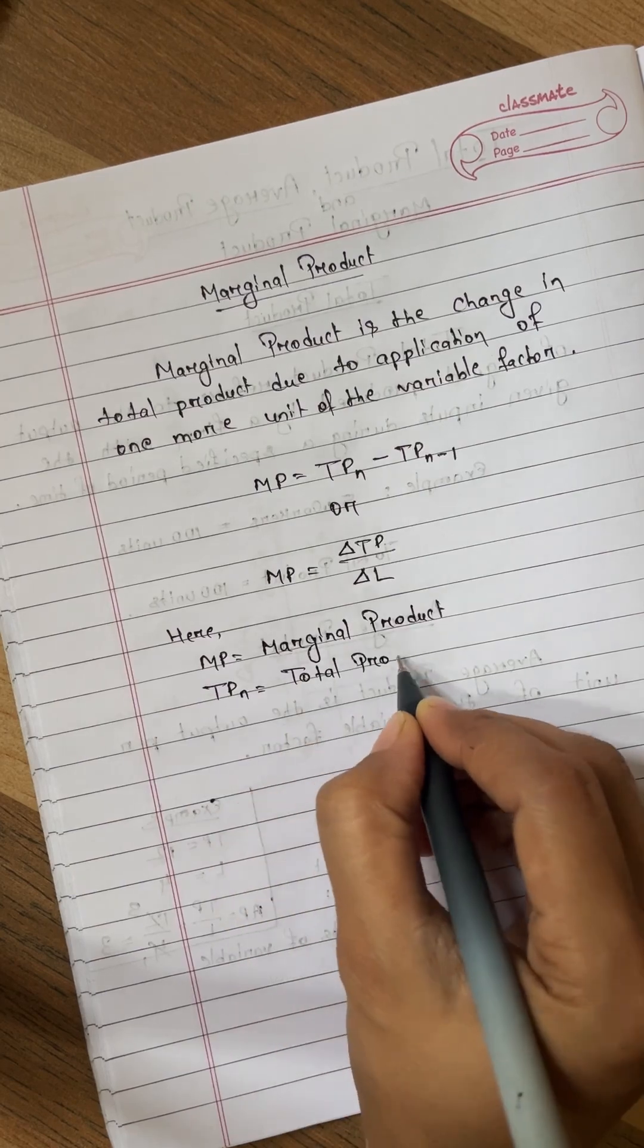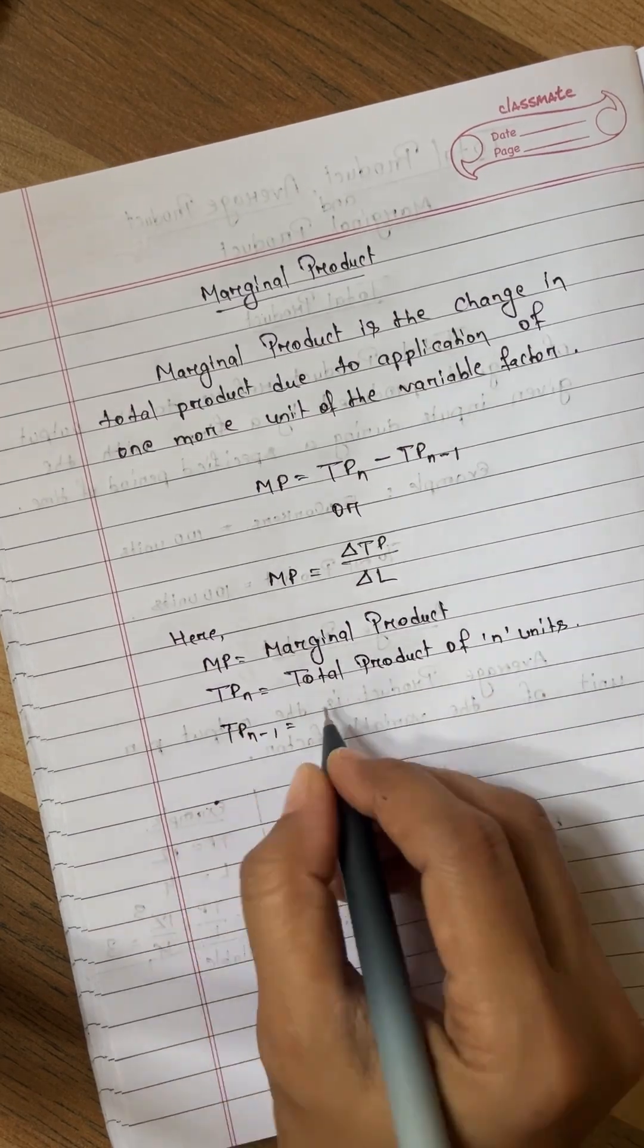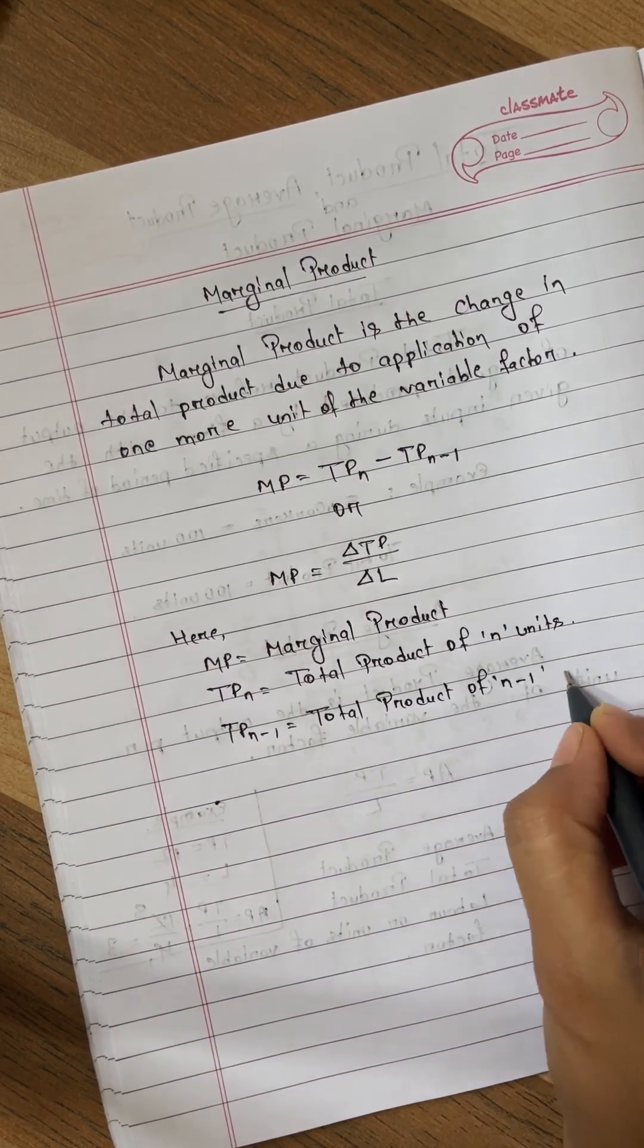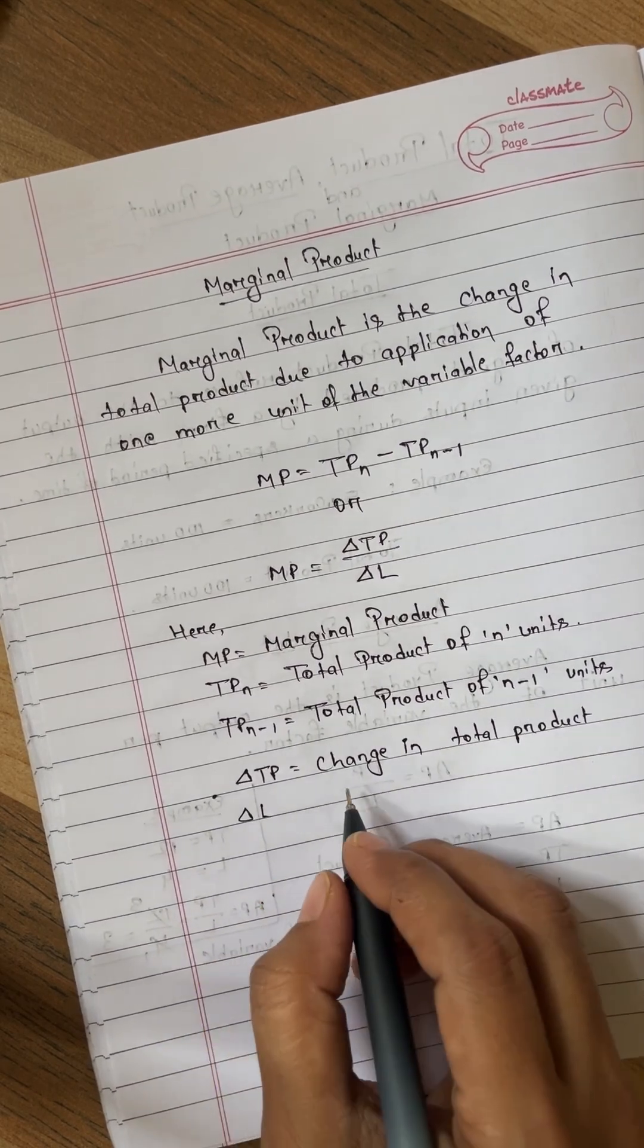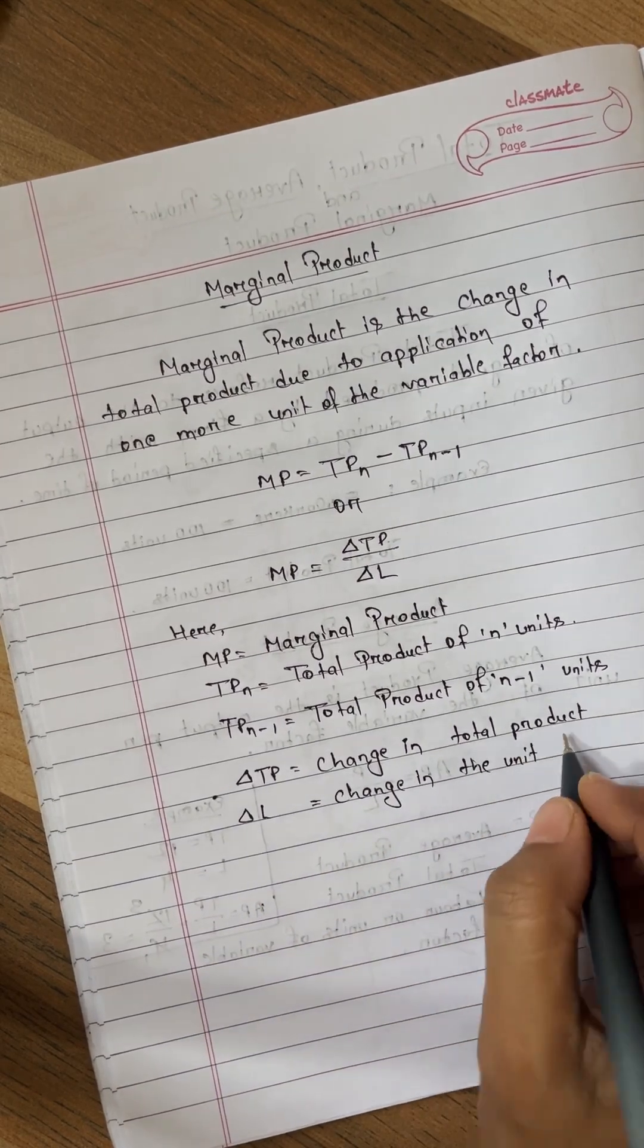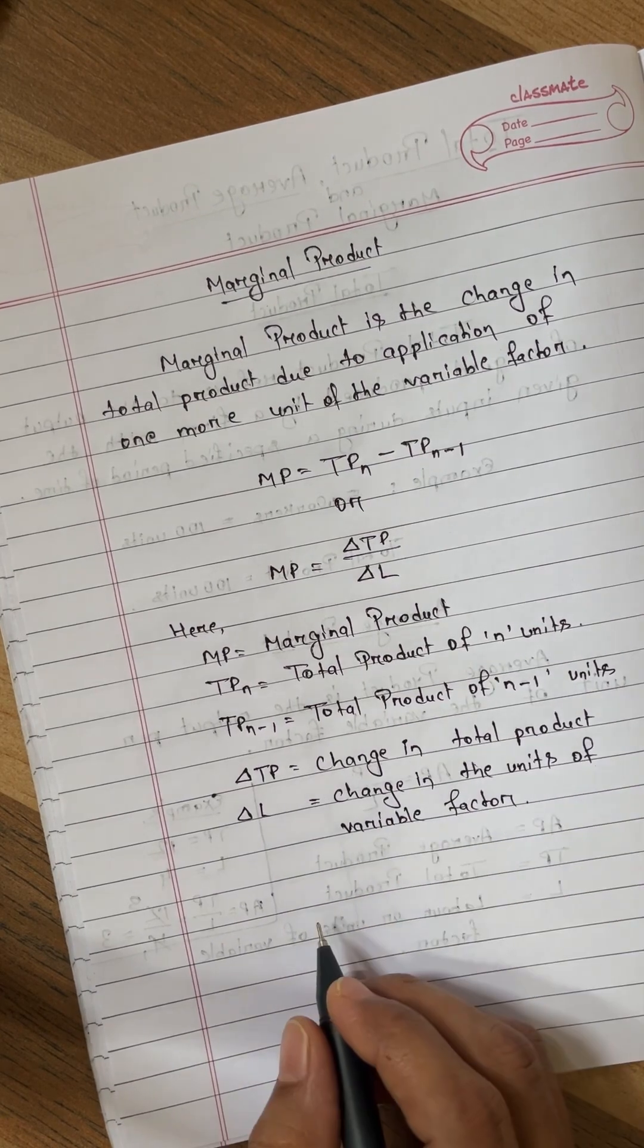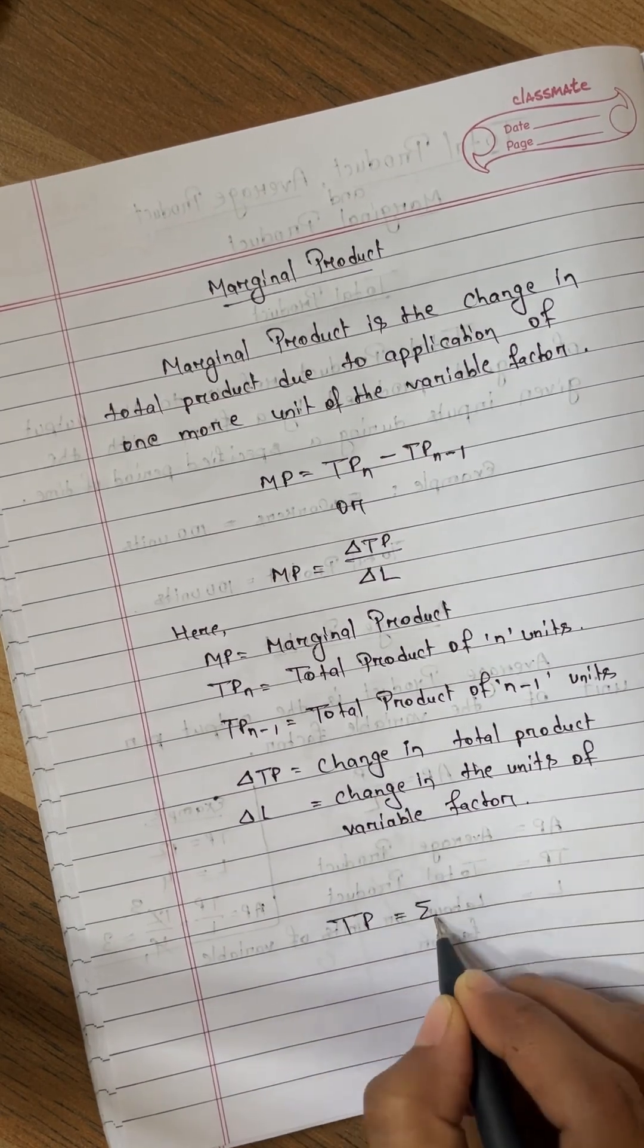Here MP means marginal product. TP N means total product of N units. TP N minus 1 means total product of N minus 1 units. Delta TP means change in total product and delta L means change in the units of variable factor. Total product can also be calculated by marginal product that is TP is equal to summation MP.